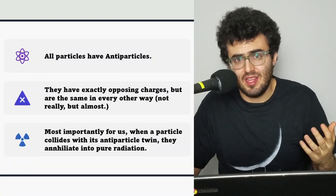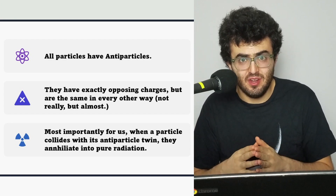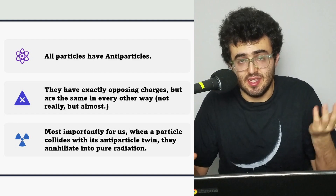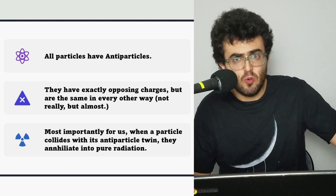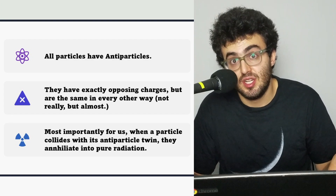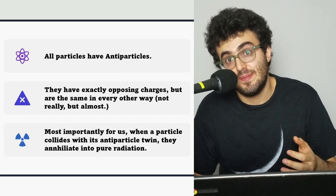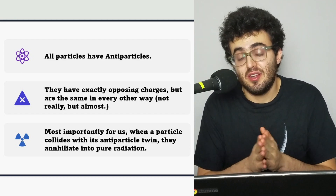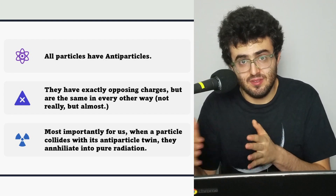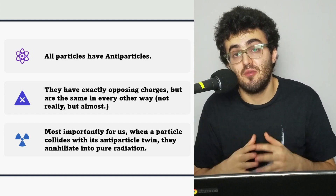Antimatter is matter — we call it antimatter only because, in a certain respect, it's exactly opposite to the matter we're more familiar with, but it's matter too; it's stuff. For example, the up quark has a plus two-thirds charge, while the anti-up quark has a minus two-thirds charge but is in all other respects exactly like the up quark. Similarly, an electron has a minus one charge, while its antimatter equivalent, the positron, has a plus one charge, but in all other ways they're equivalent.